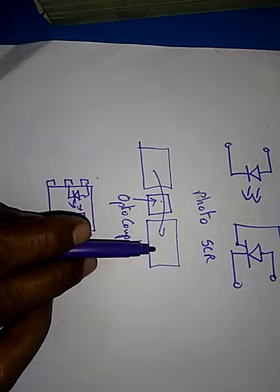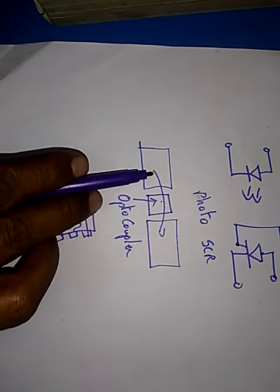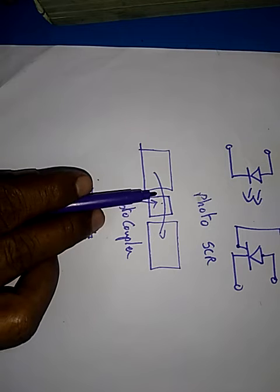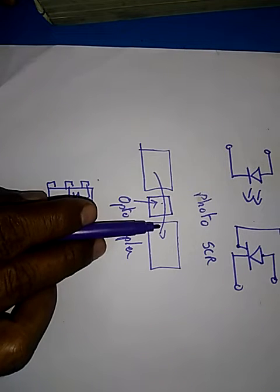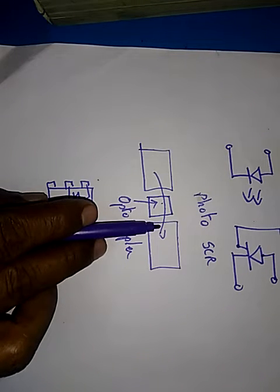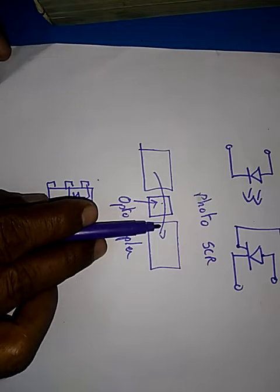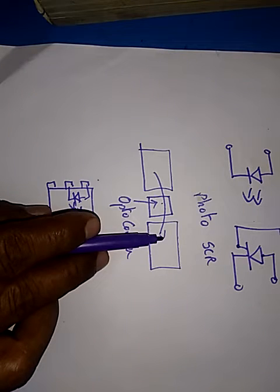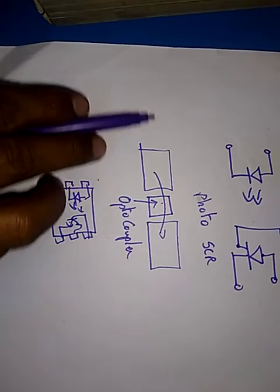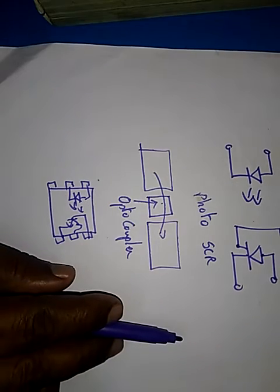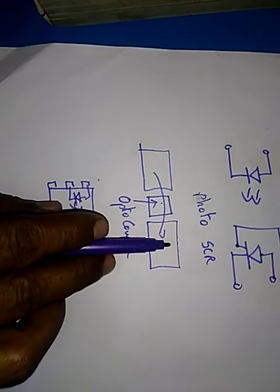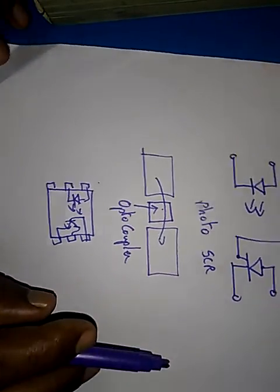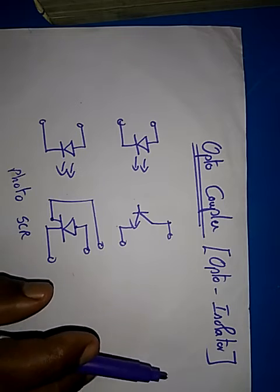So if that is the case, then what you do is you convert the electrical information into light information. Here you can go for an LED, and the other side you can have a photo transistor or photo thyristor, so that the light information is once again converted into electrical information. Therefore, each section will operate separately. Only the information alone is transferred to the next circuit. This is the basic concept behind opto couplers or opto isolators.